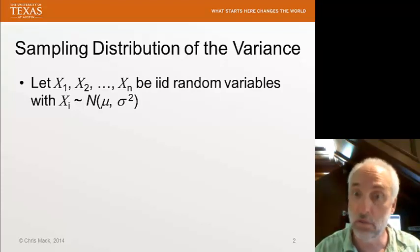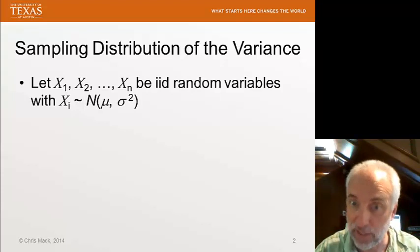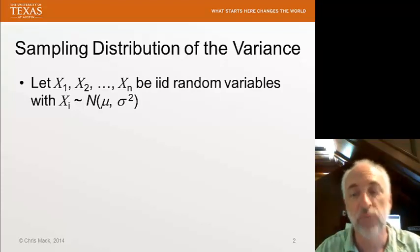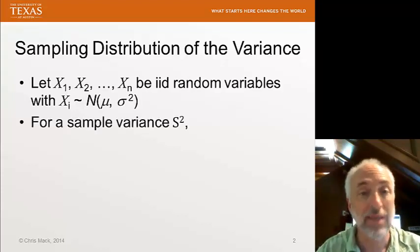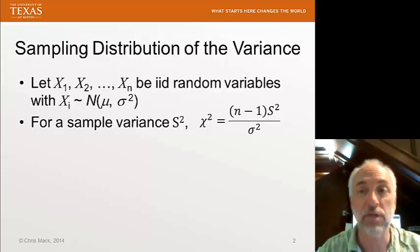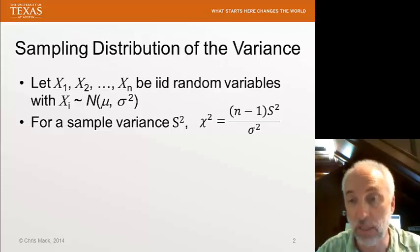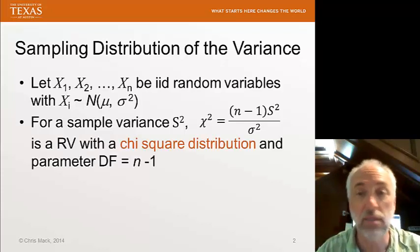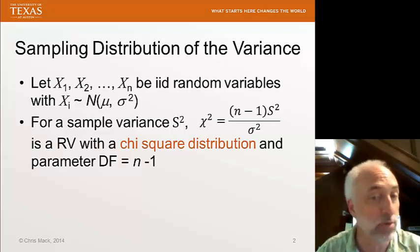If your variables are not normally distributed, then this analysis won't apply. But if they are normally distributed, then a sample variance can be characterized by a statistic we call chi-square. The degrees of freedom times the sample variance divided by the population variance. And that chi-square is a random variable with a chi-square distribution and a single parameter called the degrees of freedom equal to the sample size minus one.